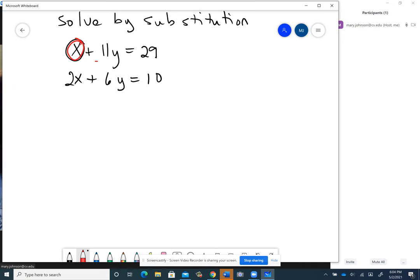So what I'm going to do first is subtract 11y from both sides. So that first equation becomes x equals negative 11y plus 29. See what I did there? I just subtracted the 11y from both sides to get that x by itself. Let me just bring this other equation along as is.